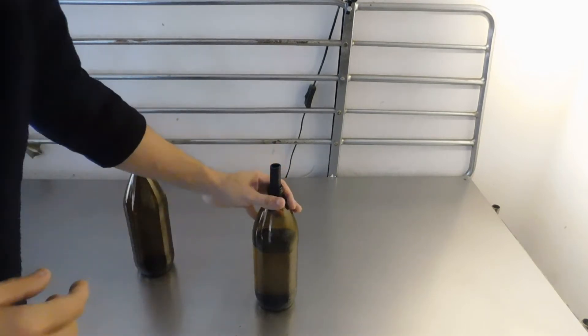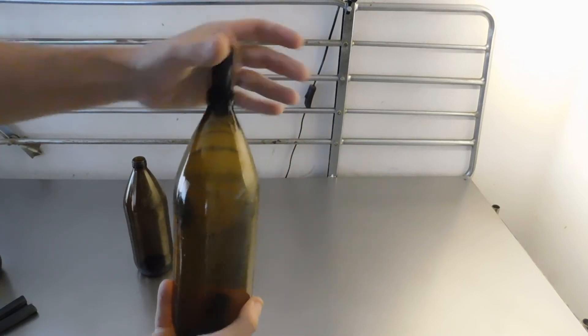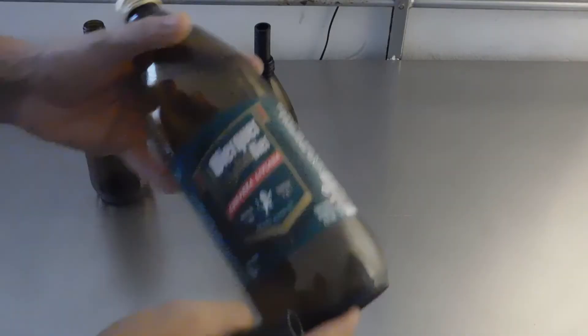Y después para facilitarlo a la hora de sacar esta agua, lo mejor es dar la vuelta, girarla y hacer un vórtice también. Y va a salir sin ningún tipo de trabajo.